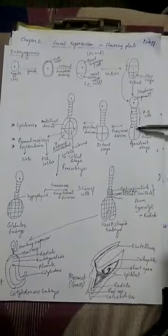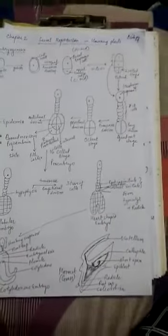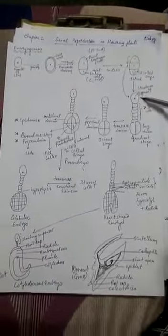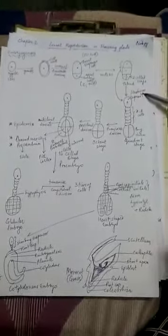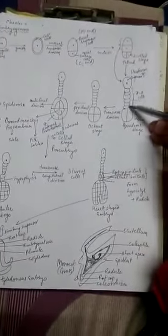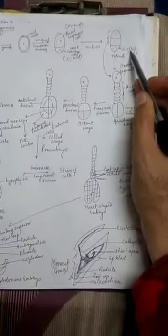The embryo and suspensor, currently carrying two cells each, start undergoing multiple divisions. The topmost suspensor cell will not divide further; it only enlarges in size and is called a haustorium — a structure that increases surface area to absorb nutrition. The cell next to the topmost suspensor cell undergoes several divisions to form seven to eight cells, and this whole structure is referred to as the suspensor as given in the NCERT.